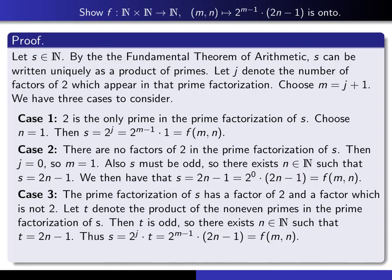So in this case, s has at least one factor of 2 and at least one factor in its prime factorization which is not 2. So let's let t denote the product of all of the non-even primes in the prime factorization. Then t is odd. So there has to exist a natural number n such that t can be written in that form. And therefore, s can be written as 2^j times t. That's exactly what the prime factorization theorem or the fundamental theorem of arithmetic tells you. But this j is the same as m minus 1 and this t is the same as 2n minus 1, as we've written here. And that's exactly f(m,n). So we've handled case 3.